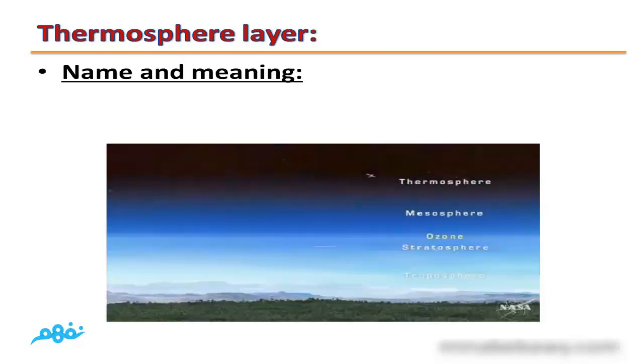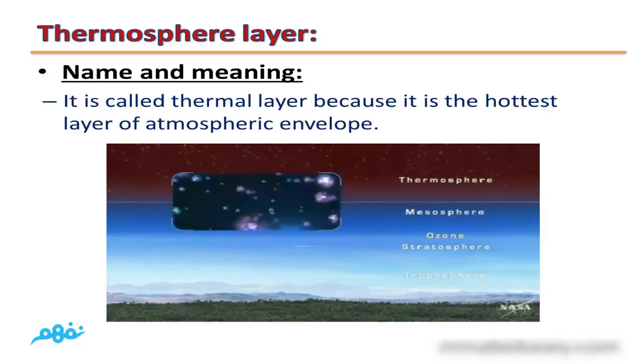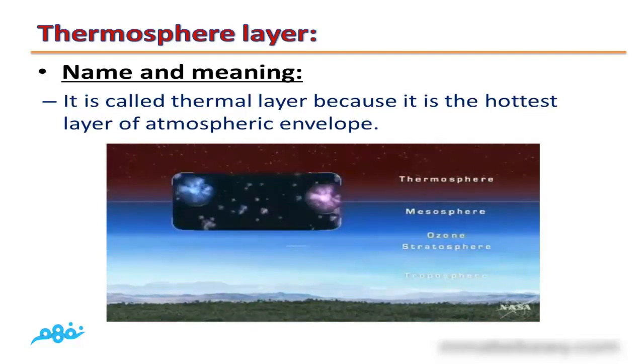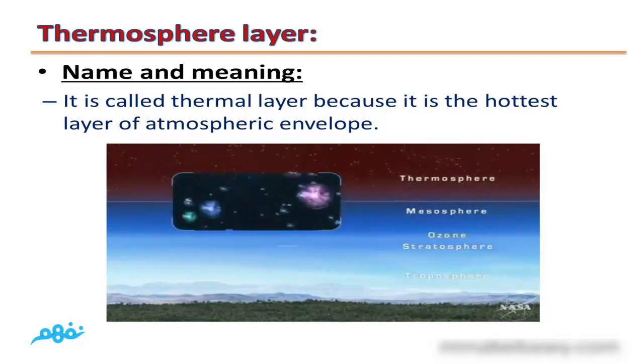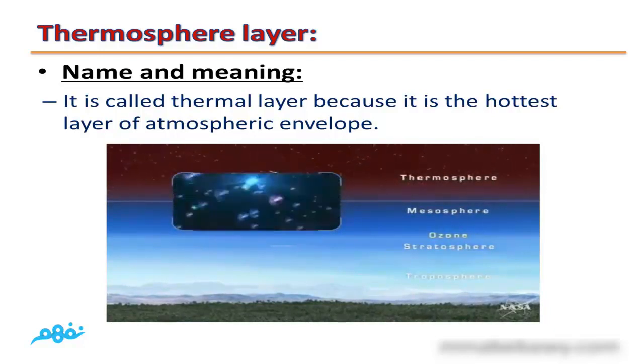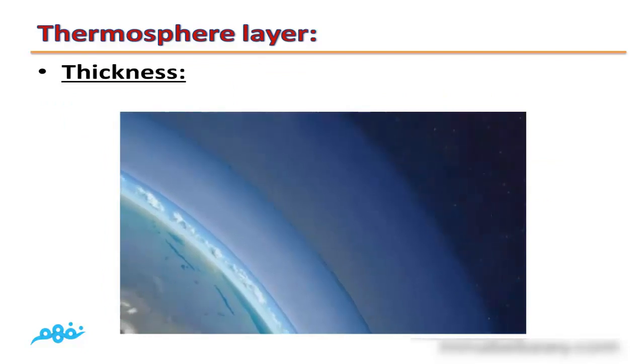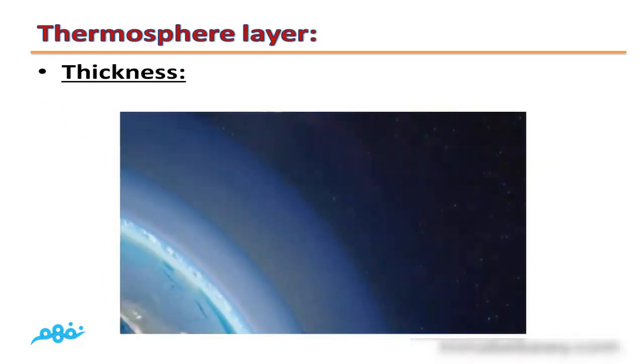The fourth layer is the thermosphere layer. Thermosphere layer is called by this name because it is the hottest layer of the atmospheric envelope. The thickness of thermosphere layer is 590 km.